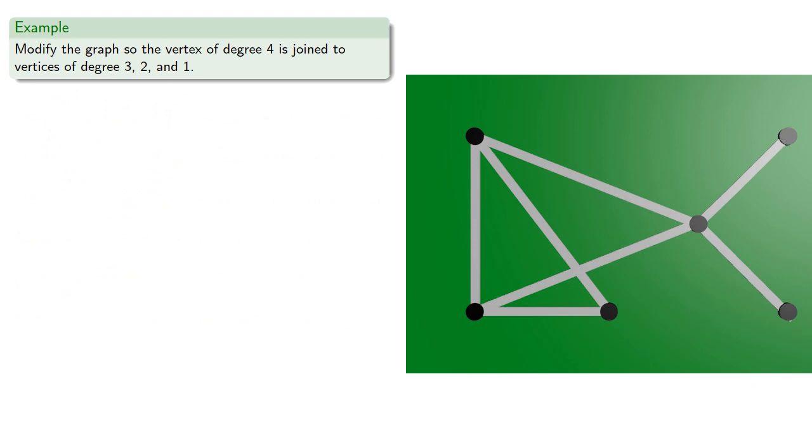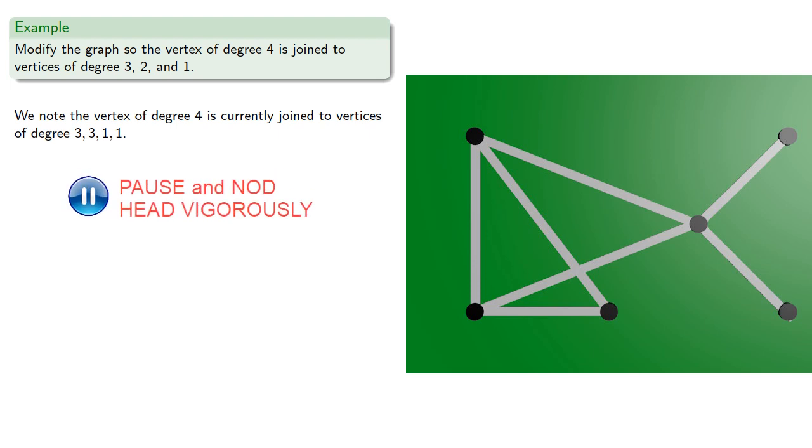So here's our graph where our vertex of degree 4 is not joined to the vertices of degrees 3, 3, 2, and 1. So, we need to switch one of these ones to a 2.